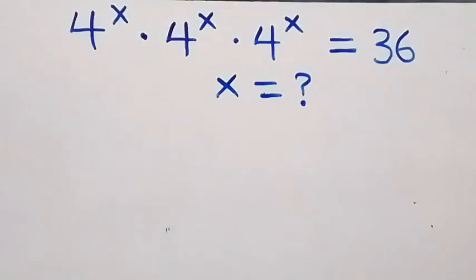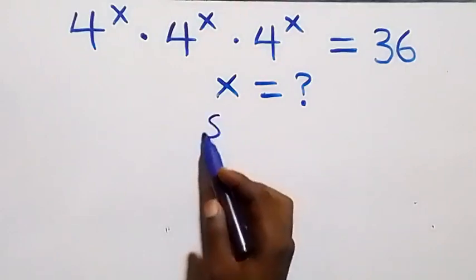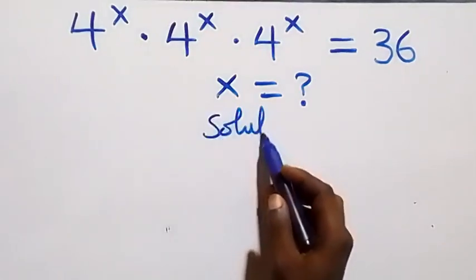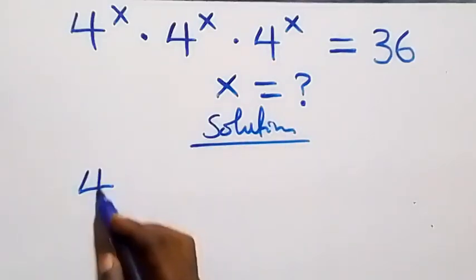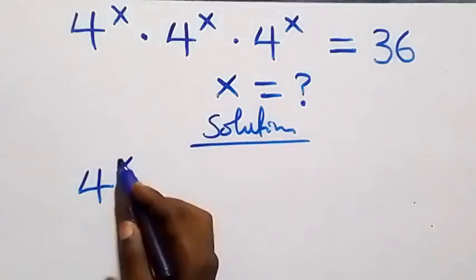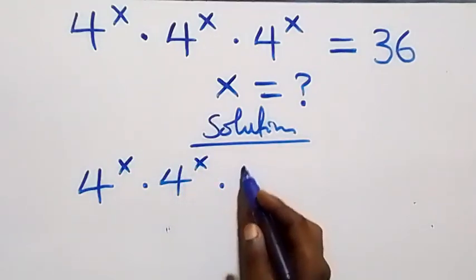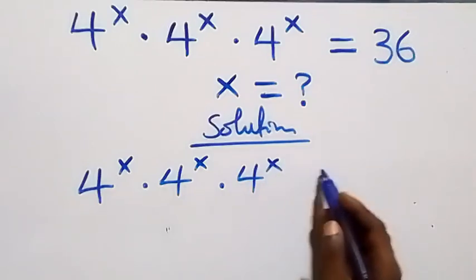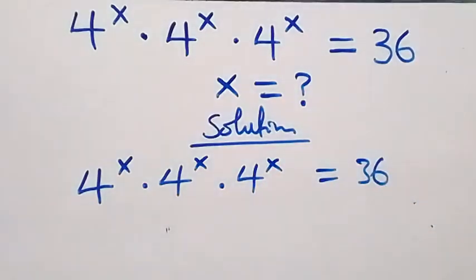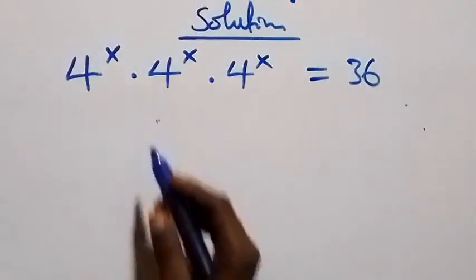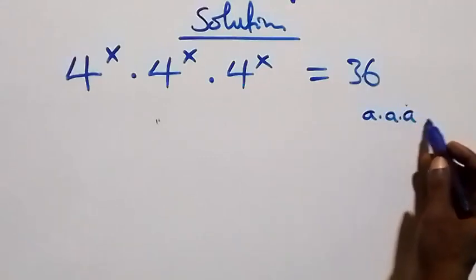Hello, you are welcome. How to solve this nice exponential equation. The equation we have is 4 raised to power x, times 4 raised to power x, times 4 raised to power x, equals 36.